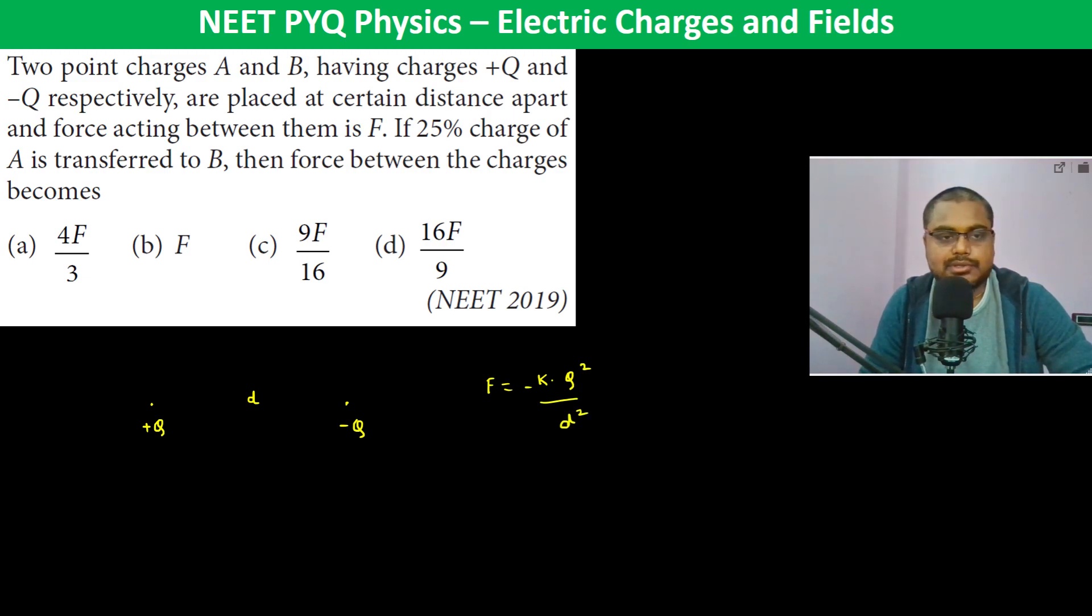25% of the charge from A is transferred to B. So charge A becomes 3Q/4. Since 25% from A went to B, charge B also becomes -3Q/4.